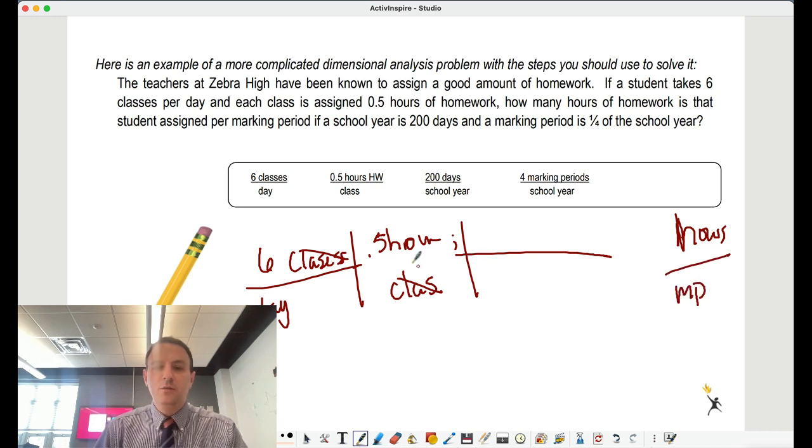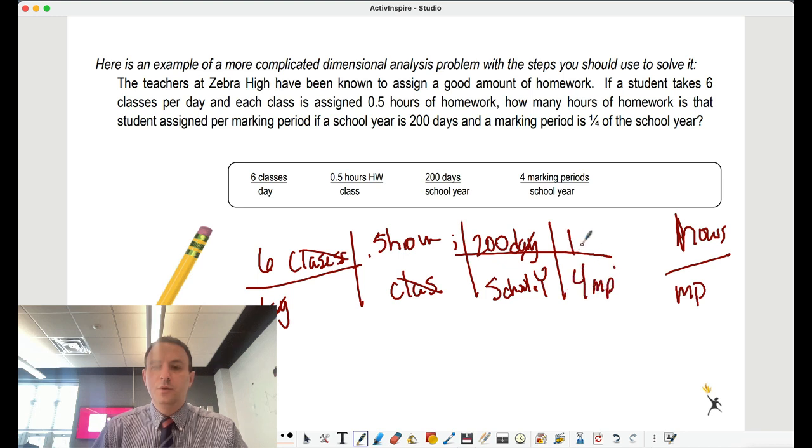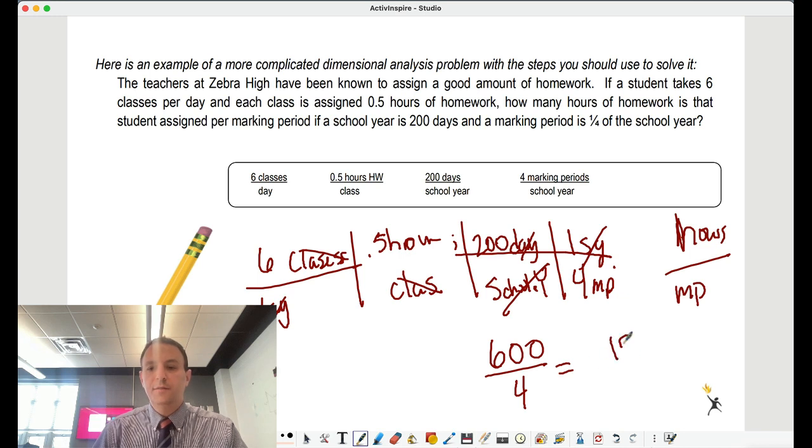Over marking period. I need to get rid of days. So those were 200 days over school years. So the days go away. And now I have four marking periods and one school year. So you can see all I have left over. So I'm really going to get 6 times 200 is 1,200. Half of that is 600 divided by 4. So they're going to have an average of 150 hours per marking period.